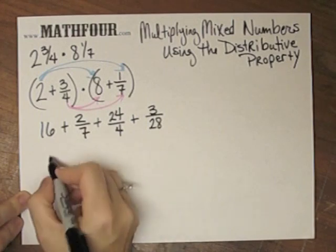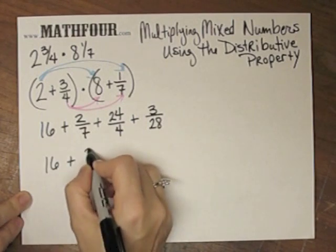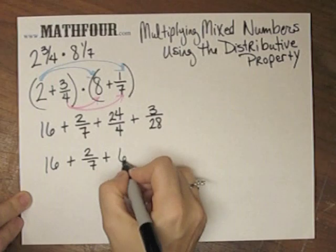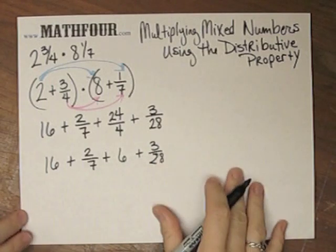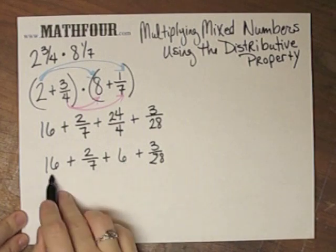So we'll go ahead and reduce this one. 24 over 4 is 6, plus 3 over 28. And these two will add easily.